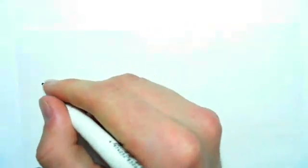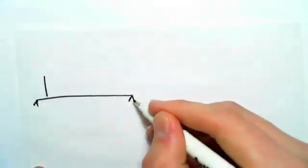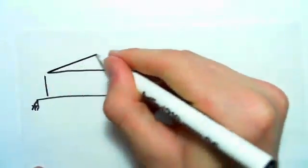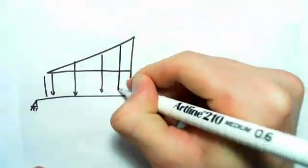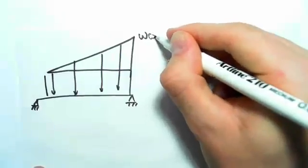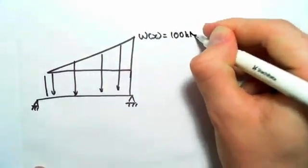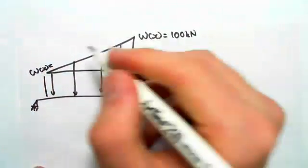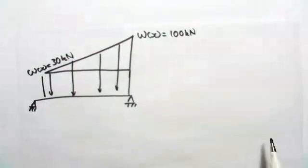So a distributed load could be something like this, this is a different distributed load that could be quite difficult. And you can't just find one. So we have a whole distributed load like this. And we're given wx equals 100 up here, 100 kilonewtons, wx equals 30 kilonewtons.